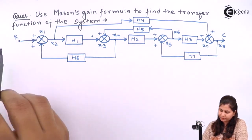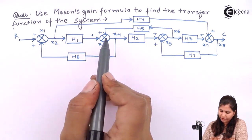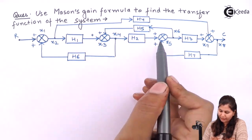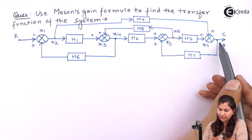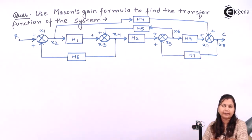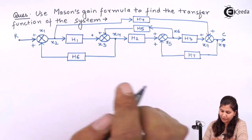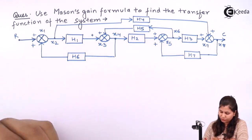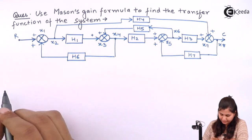So there will be a total of 10 nodes. Let's draw the signal flow graph.